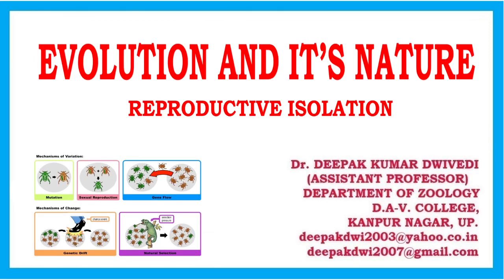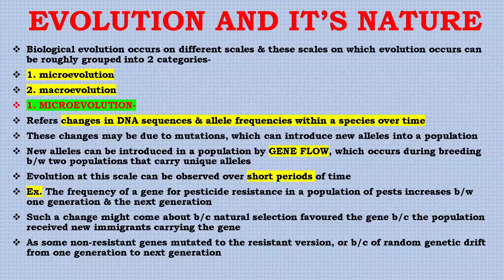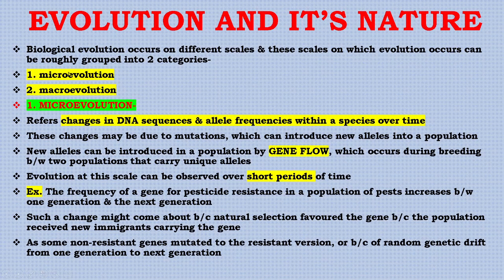Today we are going to learn a new topic in evolution: evolution and its nature, and the phenomena of reproductive isolation. Biological evolution occurs on different scales, which can be roughly grouped into two categories: one is micro-evolution and the second is macro-evolution.